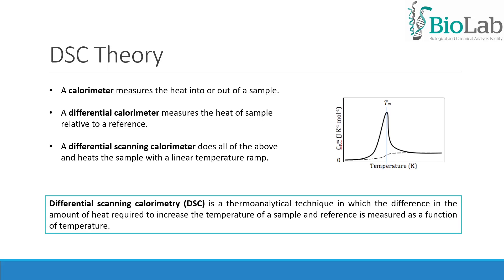As you might know, a calorimeter measures the heat into or out of a sample. A differential calorimeter measures the heat of a sample relative to a reference, and a differential scanning calorimeter does all of the above and heats the sample with a linear temperature ramp.